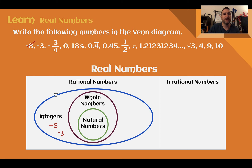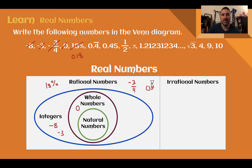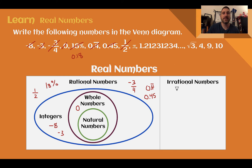Negative 3 fits right with negative 8 — it's also an integer. Negative 3 fourths is not a counting number, so it's not in any of the inner circles. It's expressed as a fraction, so it is rational. Zero is a whole number — it's the only one that is only a whole number. 18% can be written as 0.18 or 18 over 100, so it's rational. 0.4 repeating — the bar tells you it repeats. Repeating numbers are rational because they form a pattern; irrational numbers do not repeat. 0.45 is also rational since it terminates and can be written as 45 hundredths. Half is already a fraction — rational. Pi goes on forever and never repeats, so it is irrational.